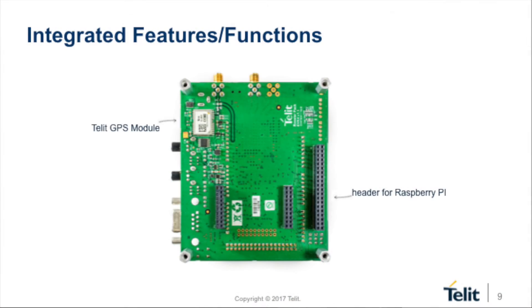GPS is on the bottom, Raspberry Pi is on the bottom. The way the header is actually positioned, it allows you to put any number of the Raspberry Pi boards on there — whether it's a Pi 2, a Pi 3, or even a Pi Zero — with the capability to make those connections.